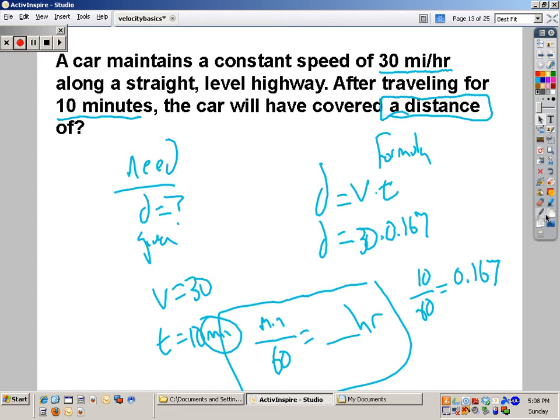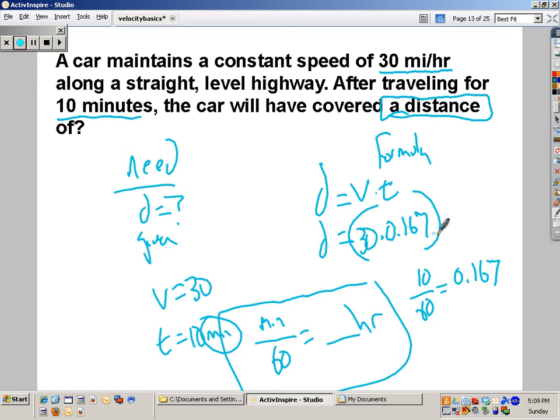So, the answer is 5. What are the units? Remember, we're trying to find distance. And we've got 30 miles per hour, so the unit is 5 miles.